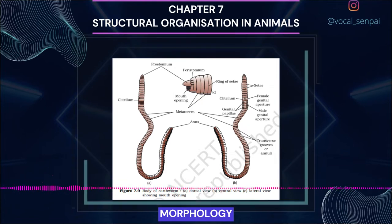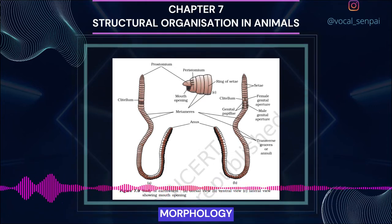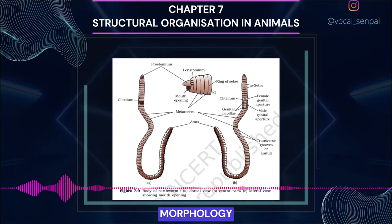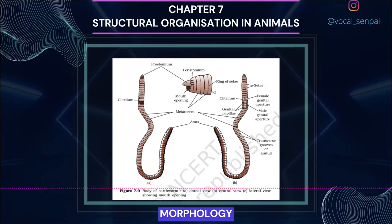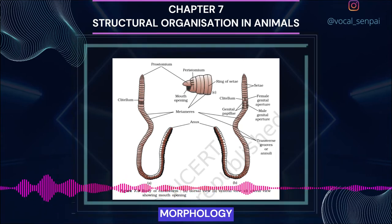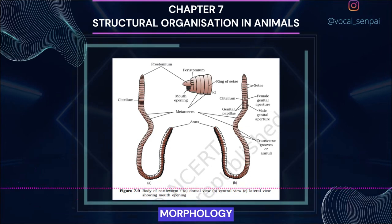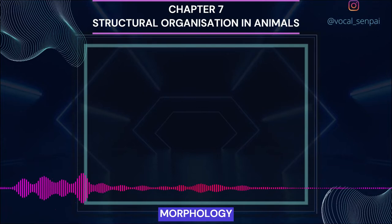The first body segment is called the peristomium or buccal segment, which contains the mouth. In a mature worm, segments 14 to 16 are covered by a prominent dark band of glandular tissue called the clitellum. Thus the body is divisible into three regions: pre-clitellar, clitellar and post-clitellar segments (figure 7.9). Four pairs of spermathecal apertures are situated on the ventrolateral sides of the intersegmental grooves of 5th to 9th segments. A single female genital pore is present in the midventral line of the 14th segment. A pair of male genital pores are present on the ventrolateral sides of the 18th segment. Numerous minute pores called nephridiopores open on the body surface. In each body segment, except the first, last and clitellum, there are rows of S-shaped setae embedded in epidermal pits; their principal role is in locomotion.